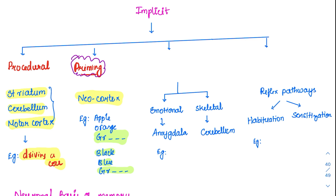This is happening at a subconscious level. That's why some decisions we make happen at a subconscious level — we are primed by ads. Nowadays all the ads coming in social media apps make us purchase some products without knowing it. That is because of the priming done by them.